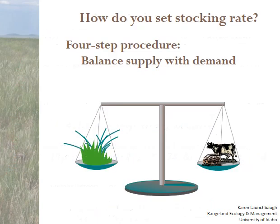That's the general process of using this four-step procedure for balancing forage demand and forage supply. It's a pencil-and-paper calculation — a ballpark figure — but it's a good place to start.